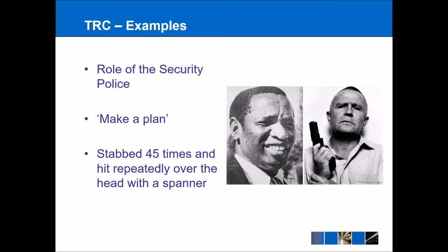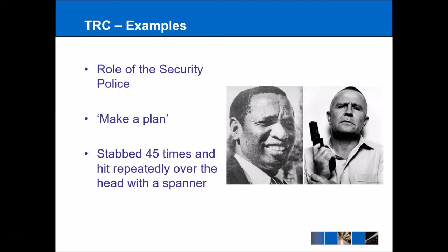It raises another interesting linguistic issue because the idea behind the Truth and Reconciliation Commission — the standing dogma — was that the truth would lead to reconciliation. But this quote suggests that wanting to forgive could actually lead to the truth, so the causation would be the other way around. Another interesting example explored the role of the security police. On the left of the screen is a picture of Griffiths Mzenghi, who was a well-known black lawyer and anti-apartheid activist described as a thorn in the side of the authorities. The hit squad was led by Dirk Kouetze, an officer in the security police, who explained to the Truth Commission that he was ordered to 'make a plan' with Griffiths Mzenghi — 'make a plan' meaning to eliminate or assassinate him.